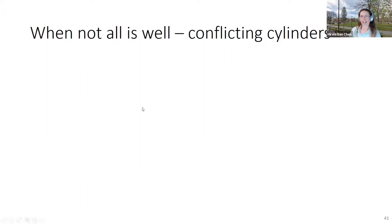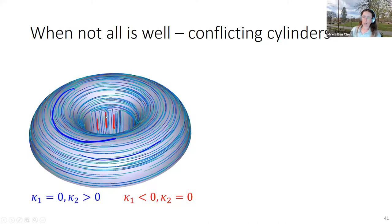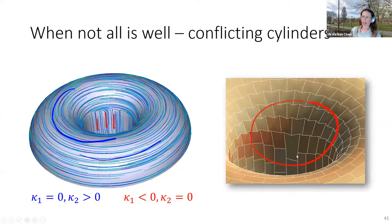There are situations where this approach doesn't work — geometries we call conflicting cylinders, where no smooth guiding field satisfies the requirements. For example, if one region has kappa1 = 0 and kappa2 > 0 (parabolic) with one guiding direction, and an adjacent region is an inverted cylinder with kappa1 < 0 and kappa2 = 0 requiring a conflicting direction, there's no way to connect them smoothly with strict alignment. In practice you get many singularities along the interface and non-pleasing hexagon shapes. If you must stick with hexagons, there's no way out; one option may be to work with combined quads and hexagons, but this is future work.